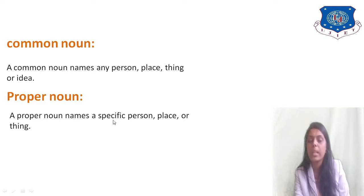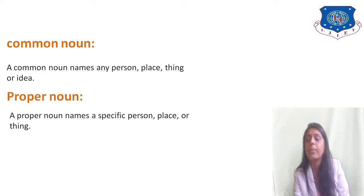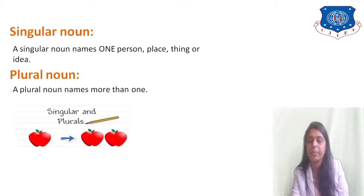When I say I am going to Delhi, Delhi is a specific place, so it is a proper noun. And when I say Ayushi is going to Delhi, then both Ayushi and Delhi are proper nouns because we are talking about a specific person and a specific place.